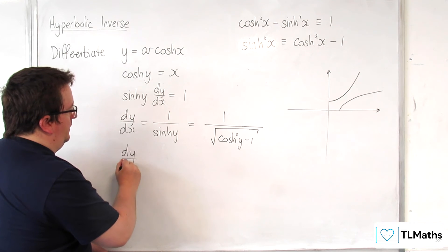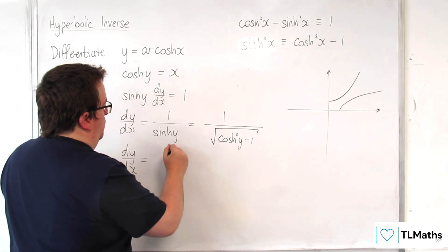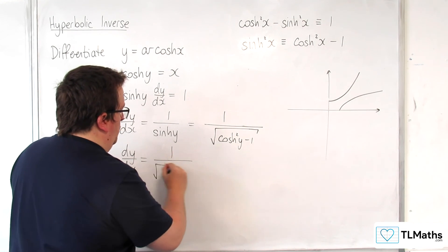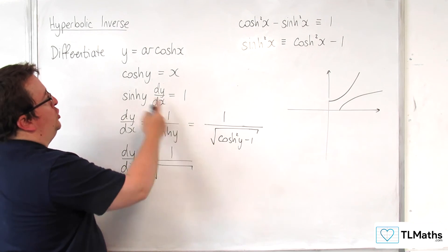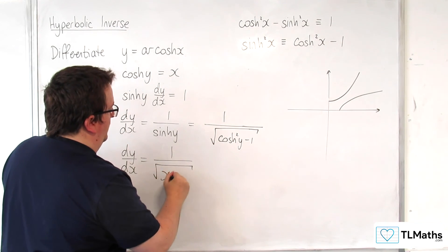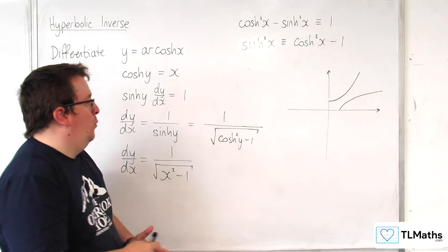So dy/dx is going to be equal to 1 over the square root of, well cosh of y was x, so we have x squared take away 1.